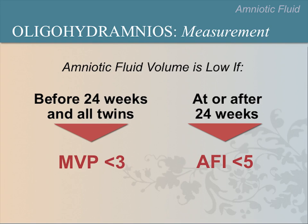There are two ways to measure oligohydramnios — use only one method, not both. Before 24 weeks of gestation, measure the maximum vertical pocket; also use this method if there are twins. At 24 weeks and later, measure the amniotic fluid index. An MVP less than 3 cm or an AFI less than 5 cm indicates oligohydramnios. Here are more examples of oligohydramnios — notice how these fetuses are harder to see because there is no surrounding fluid.